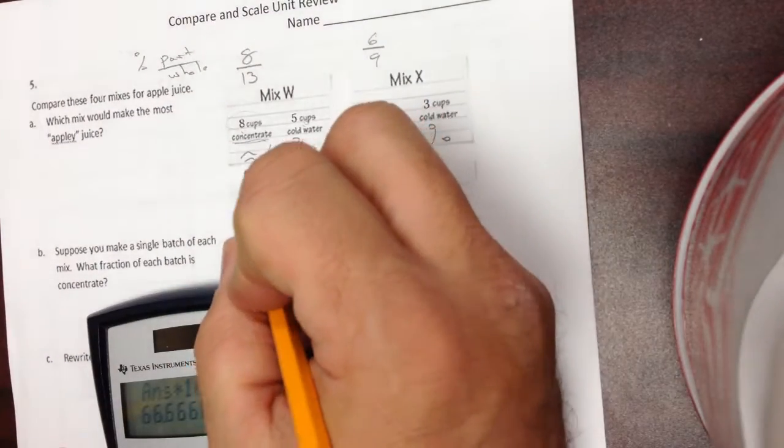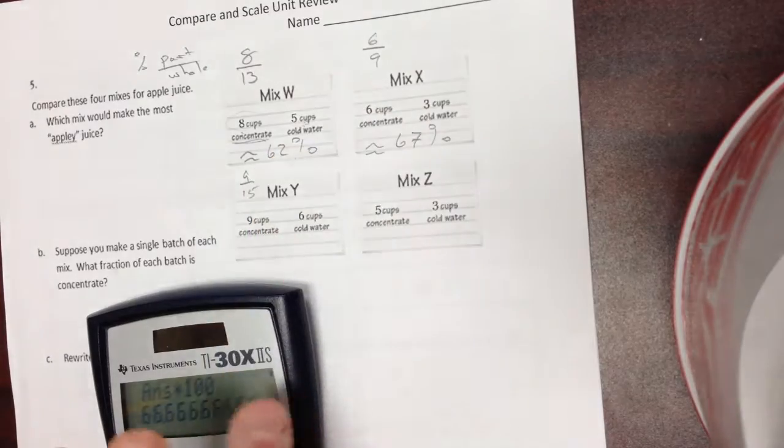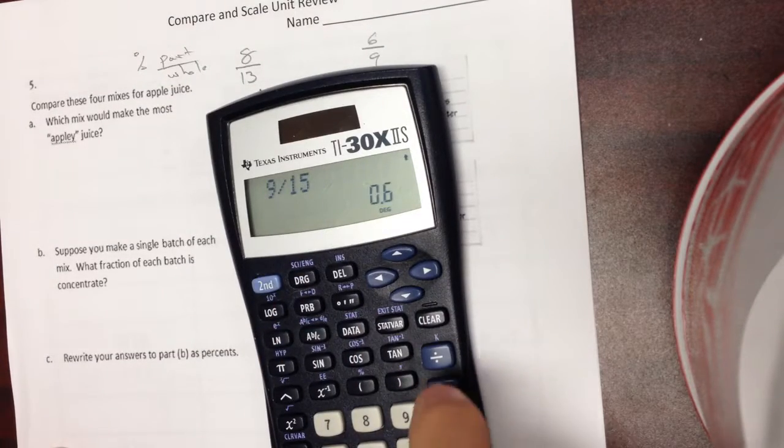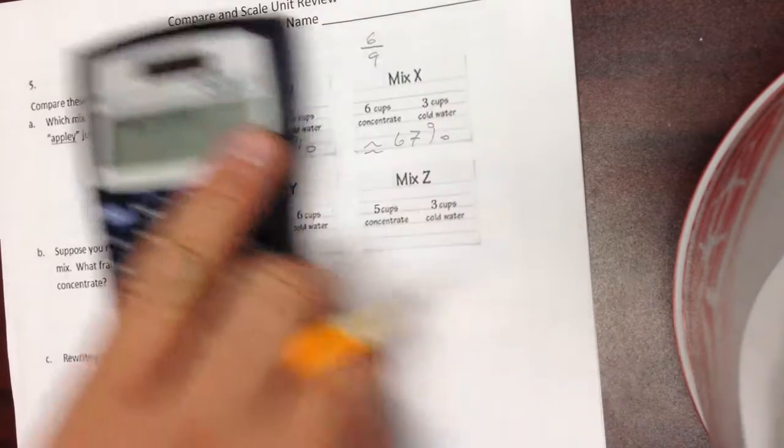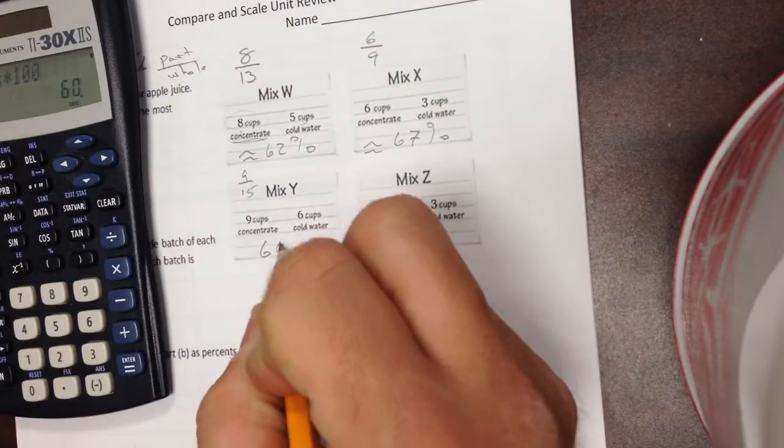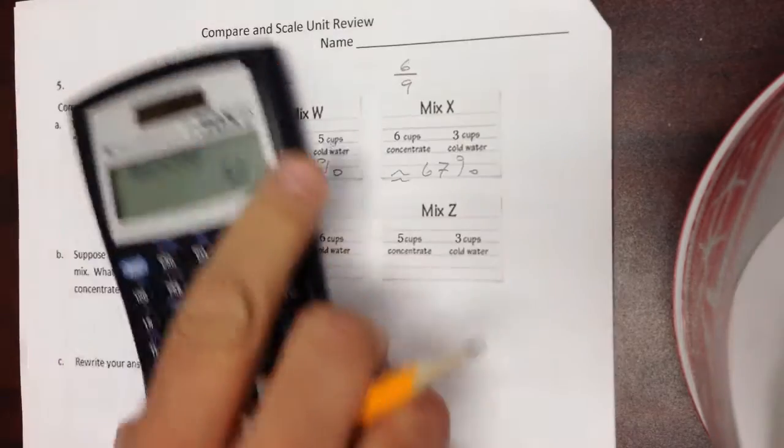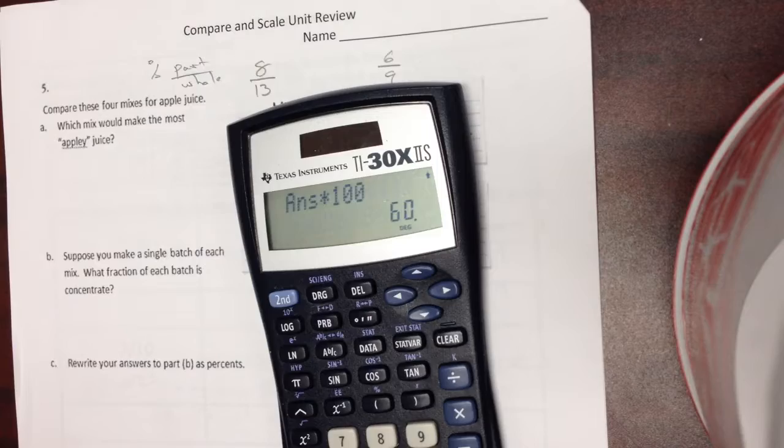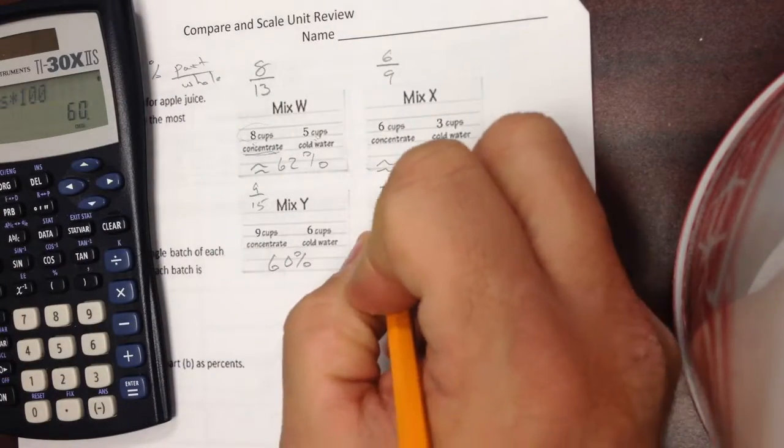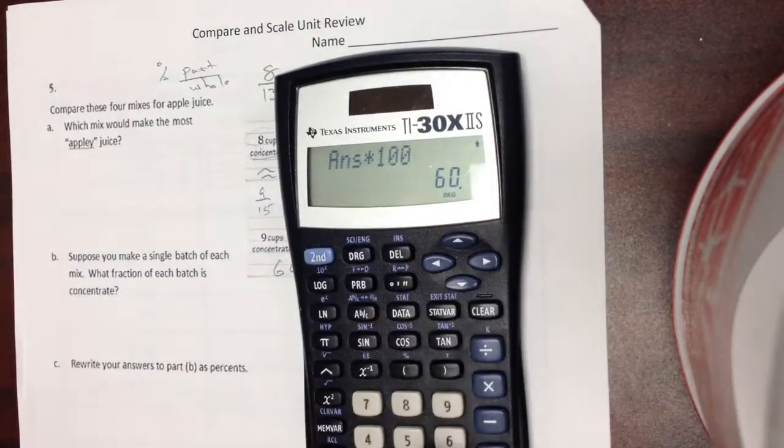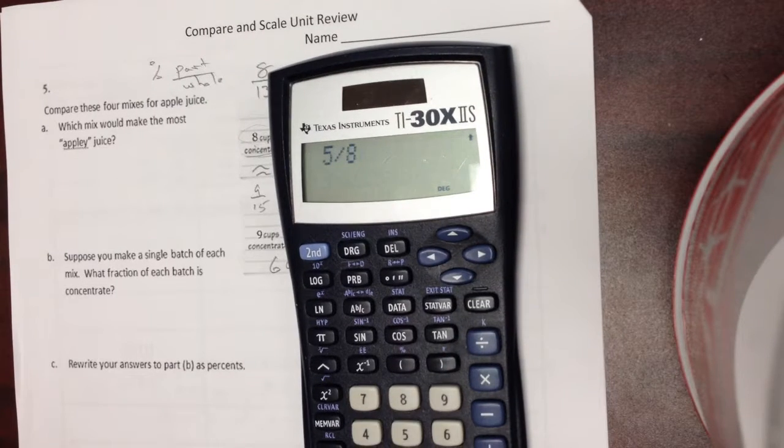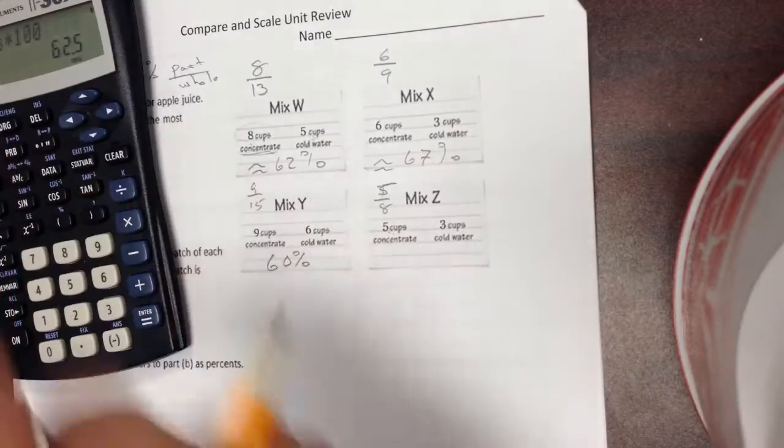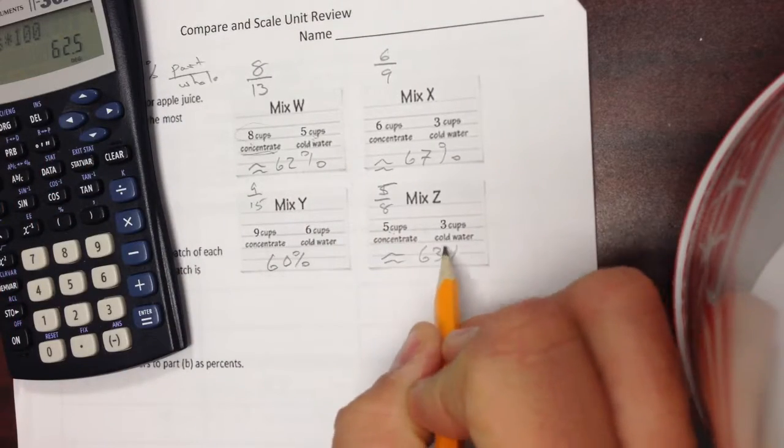All right, this one is going to be 9 out of 15. 9 divided by 15, times by 100. Move that decimal point over. 60%, and that's exact. And then I have 5 out of 8. 5 divided by 8, times 100. And if we go to the nearest whole percentage, that would be 63%.